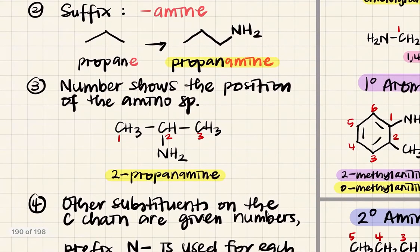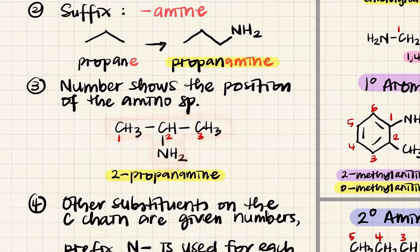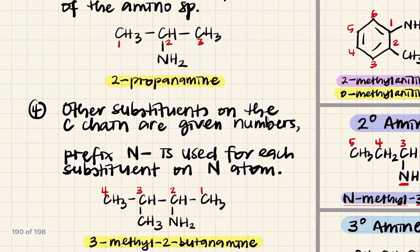Numbering shows the position of your amino group. Let's say you have propanamine but the amino group is attached to the second carbon — you have to show the numbering to tell where the amino group is located. So it becomes 2-propanamine.